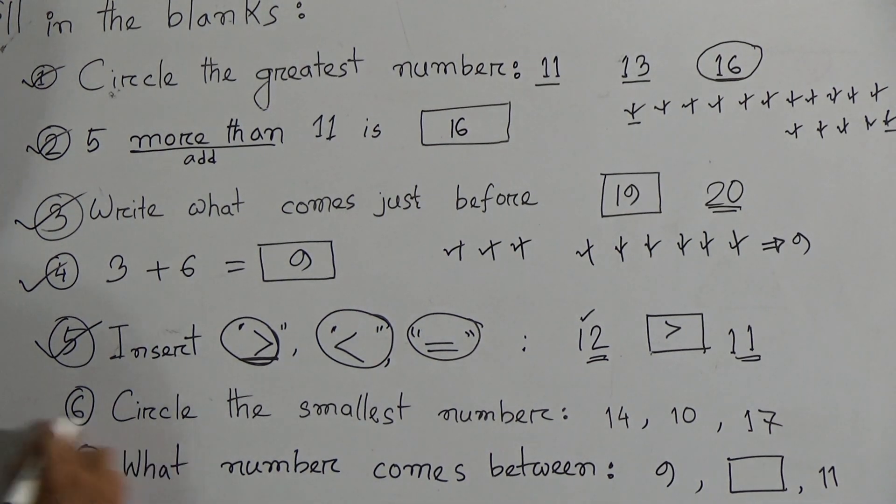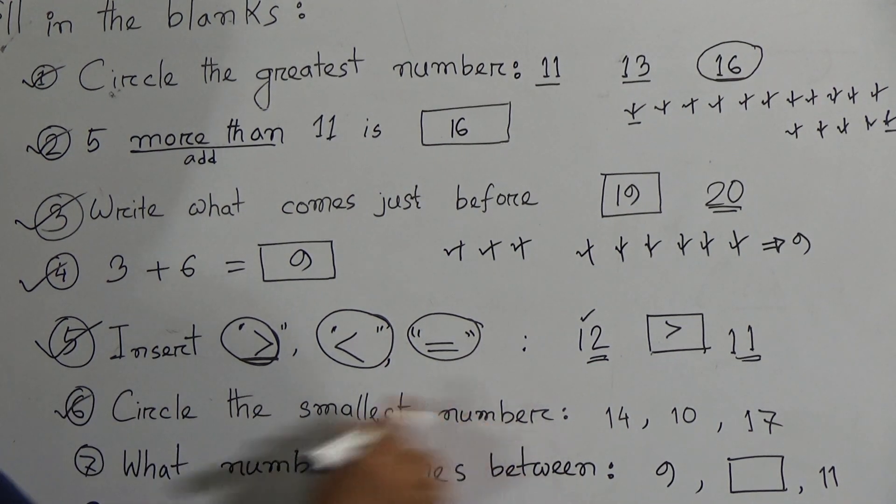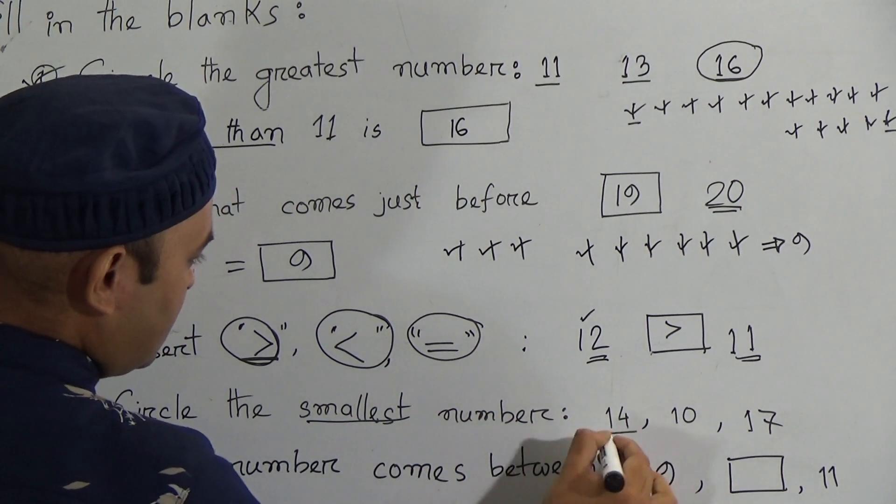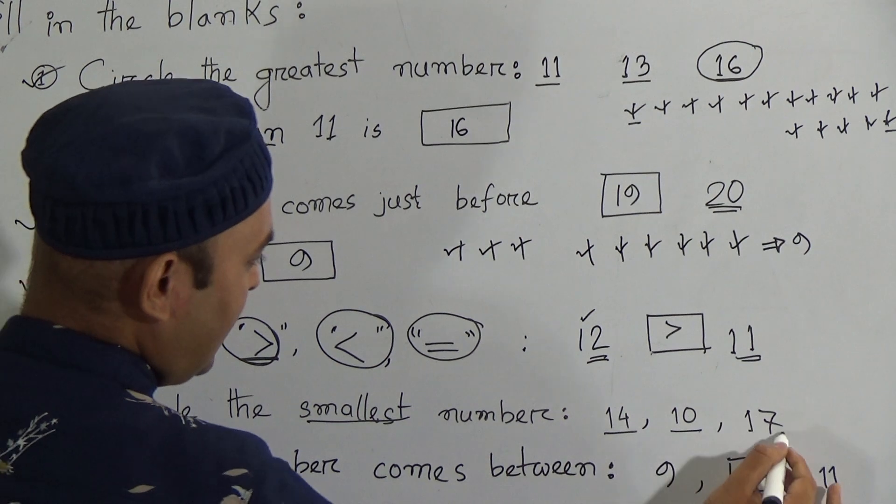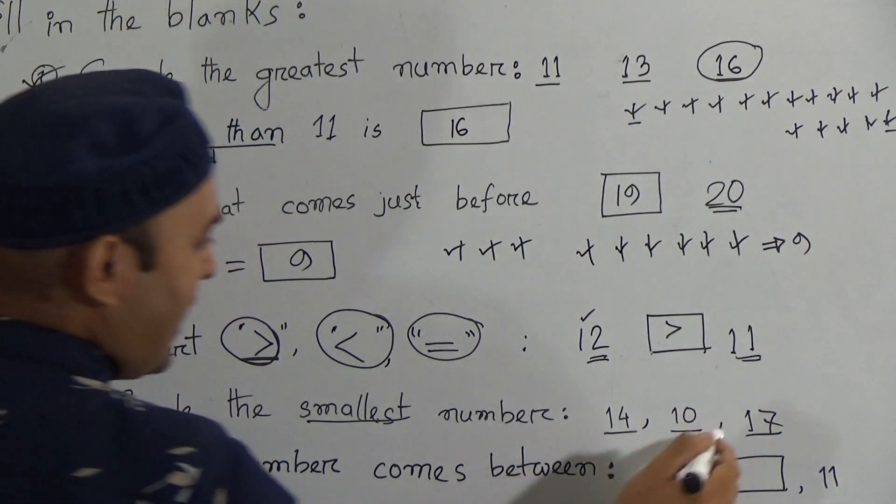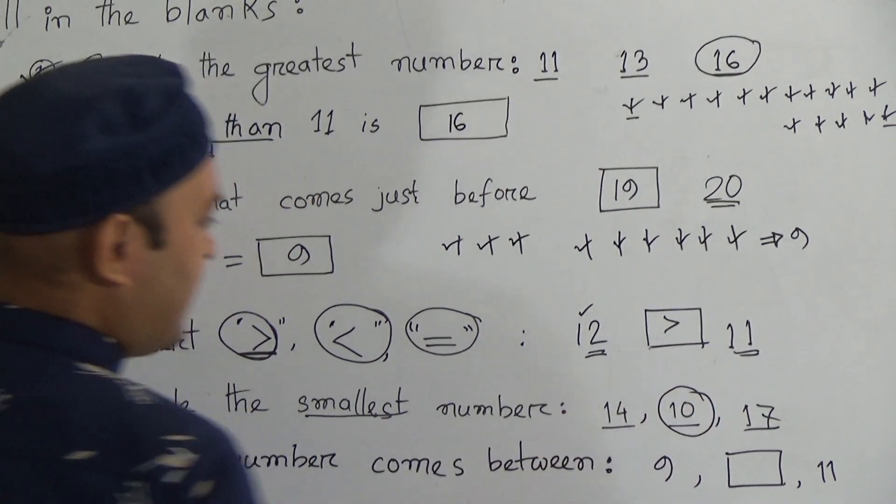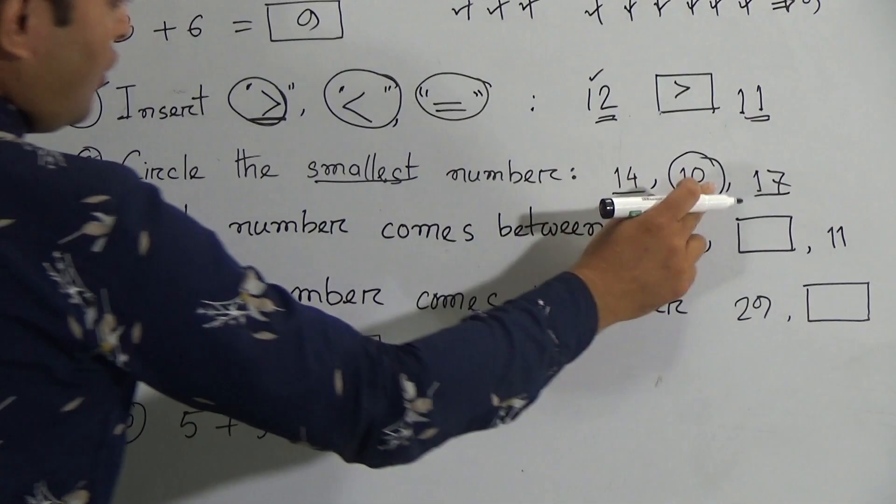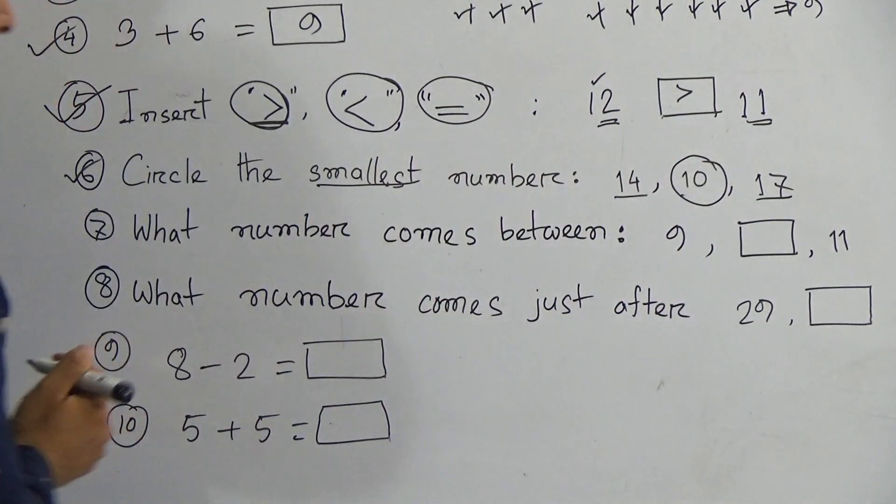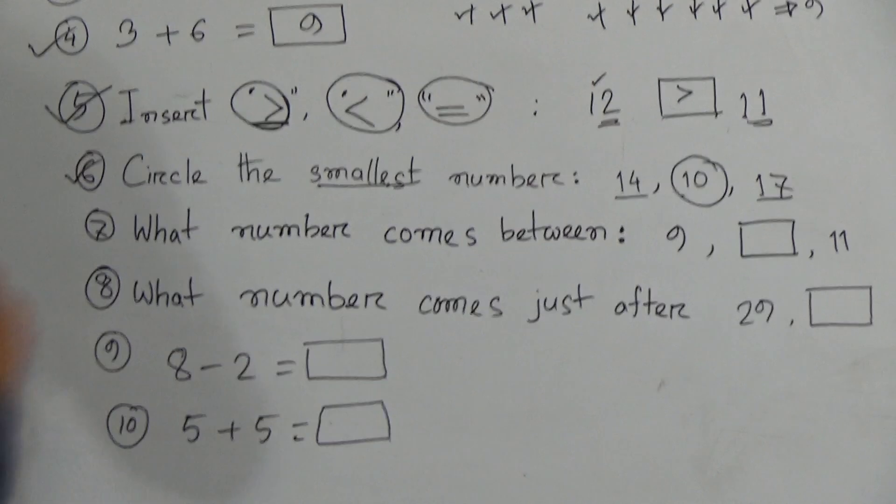Next one. Circle the smallest number. Circle the smallest number. Here there are three numbers: number 14, number 10, and number 17. Among them, there is 10 is smallest, so circle number 10.